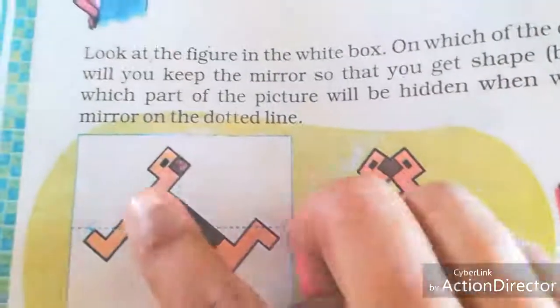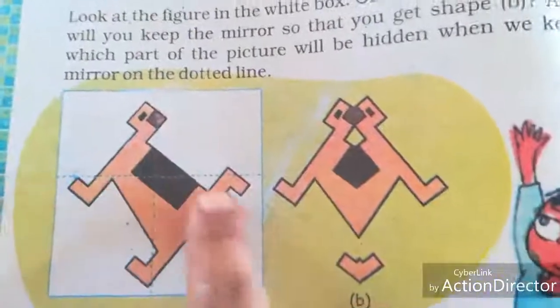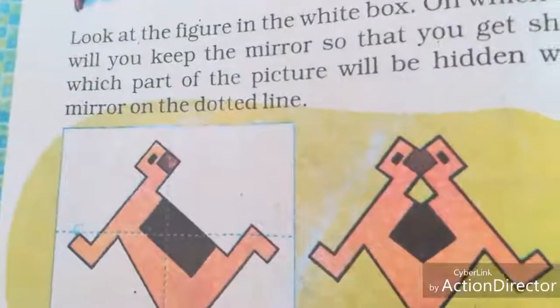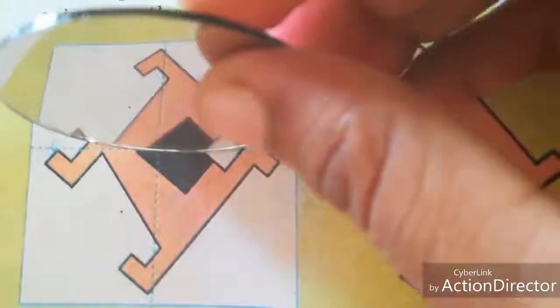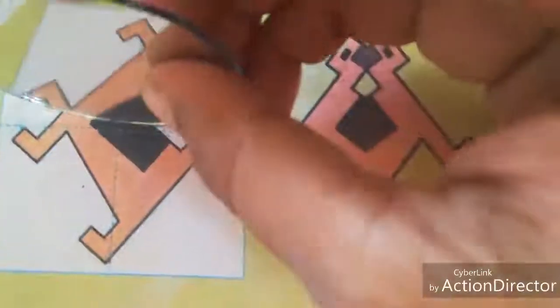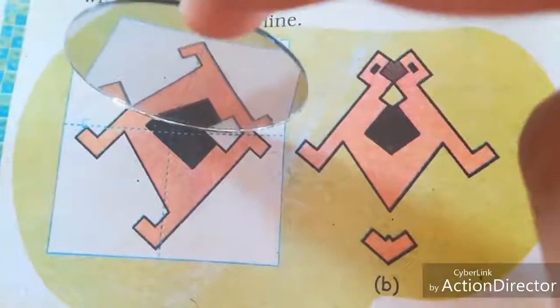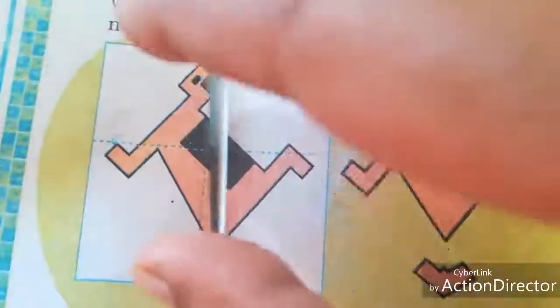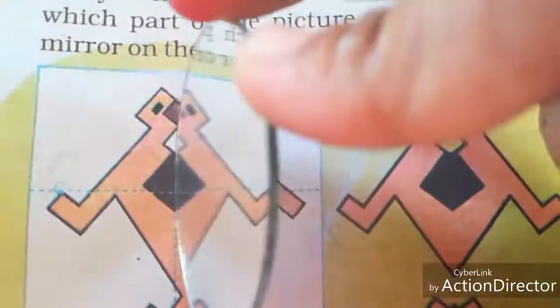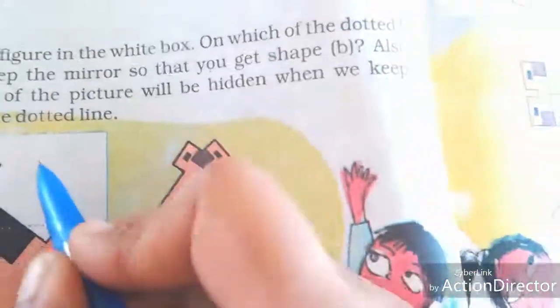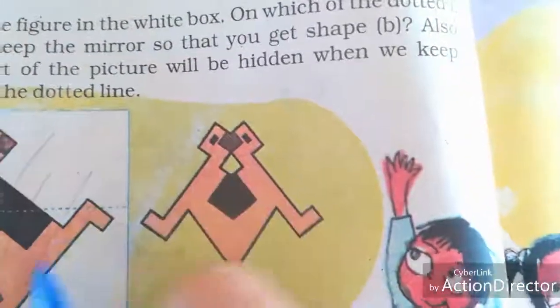Now look here. They draw two dotted lines — one in a vertical manner and one in a horizontal manner. First, we have to keep it in a horizontal manner. Can you see this image as B? No. Next — can you see this image as B? Yes. So this is the visible part and these are the hidden parts.